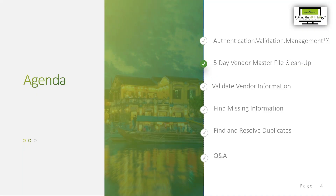Let's review the agenda. We will first review my proprietary vendor process system — Authentication, Validation, Management — from which everything that I do is based on. Then we'll look at my five-day vendor master file cleanup process and the tools I use for that, specifically for validating vendor information, finding missing information, and finding and resolving duplicates. Then we'll wrap up with the Q&A session.